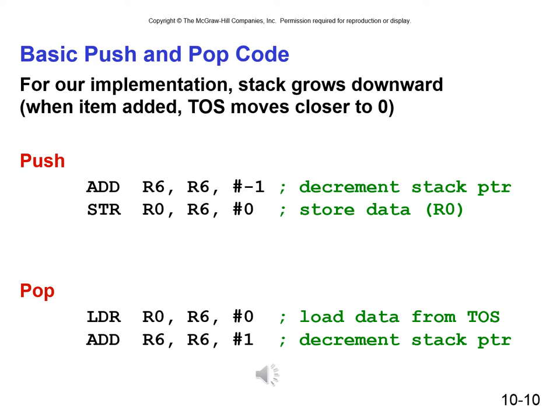To pop the top item off the stack, the return value gets stored in R0. We use an LDR to load the value stored at the address in R6 into R0. Then we move the stack pointer — we say we decrement it, but we're actually adding one because the stack grows negatively downward.